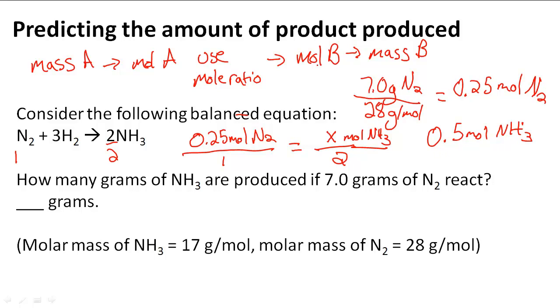So now that we know the moles of NH3, we can multiply by its molar mass, which is 17 grams per mole, to get the grams of NH3. So when I multiply 0.5 times 17 grams, I get 8.5 grams, which is the answer to our problem. And it has two significant digits, because we started with two significant digits.